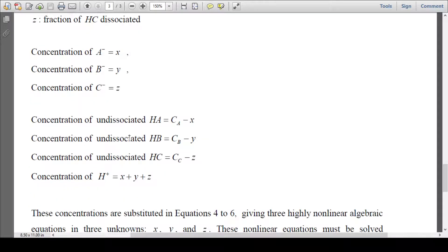Concentration of undissociated HA would be CA minus X, undissociated HB is CB minus Y, undissociated HC would be CC minus Z. Total hydrogen ion concentration H+ would be X plus Y plus Z.